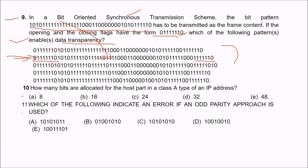Question 10: how many bits are allocated for the host part in a Class A type IP address? The answer is 24 bits. These 24 bits are allocated for the host part in a Class A IP address.